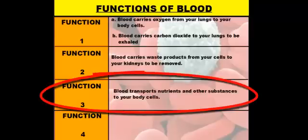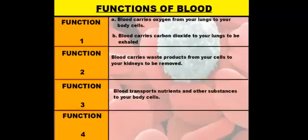Our third function is that blood transports nutrients and other substances to your body. The blood plasma — the liquid part of your blood — is where the nutrients and other substances are floating and dissolved, so they can move out to your cells and then diffuse into your cells.